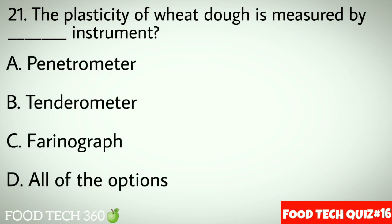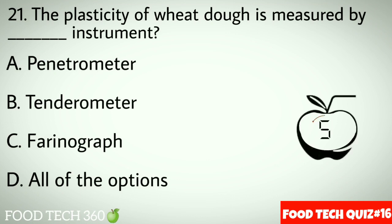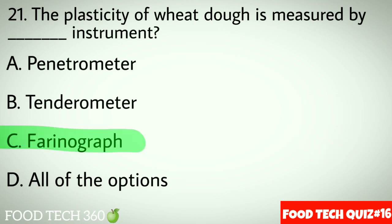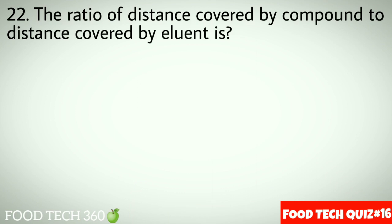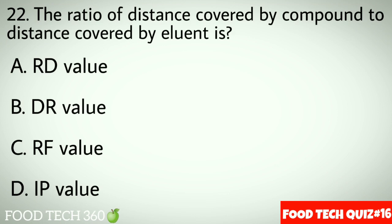Question No.21: The plasticity of wheat dough is measured by dash instrument. Options A: Penetrometer. B: Tendrometer. C: Farinograph. D: All of the options. Correct answer C: Farinograph.